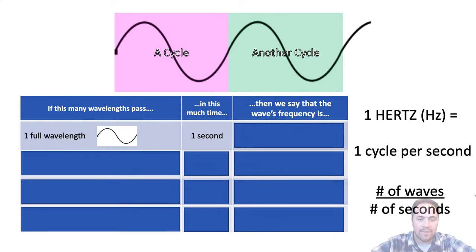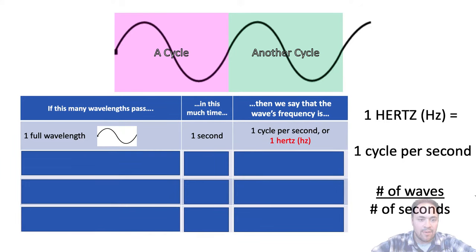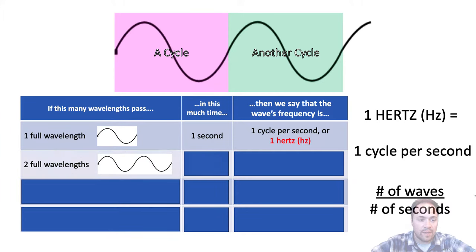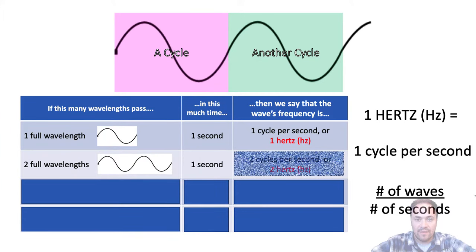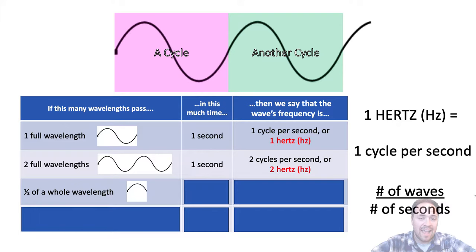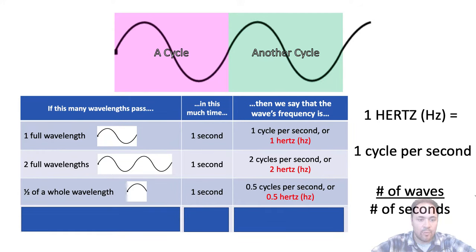For example, if one full wavelength occurs in one second, the frequency is one cycle per second, or one hertz. If two full wavelengths occur in one second, the frequency is two cycles per second, or two hertz. Waves don't have to be whole — if half a wavelength occurs in one second, that's 0.5 cycles per second, or 0.5 hertz.